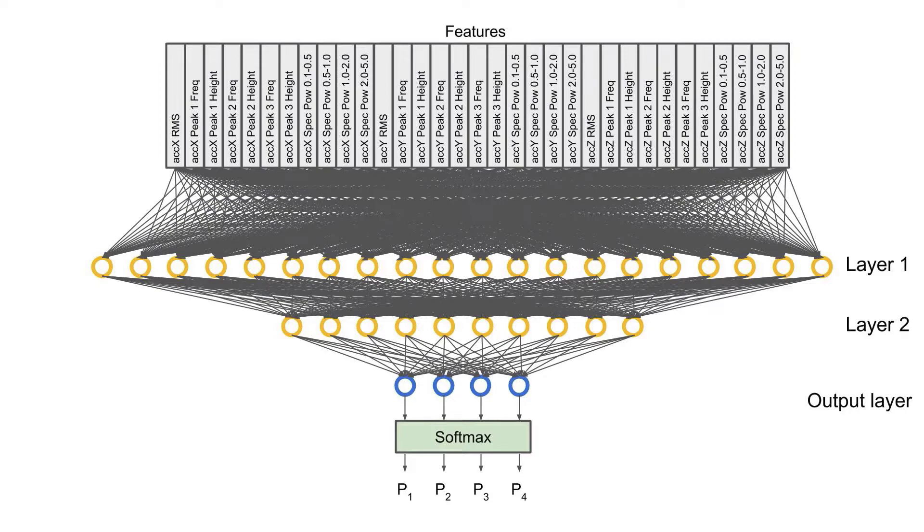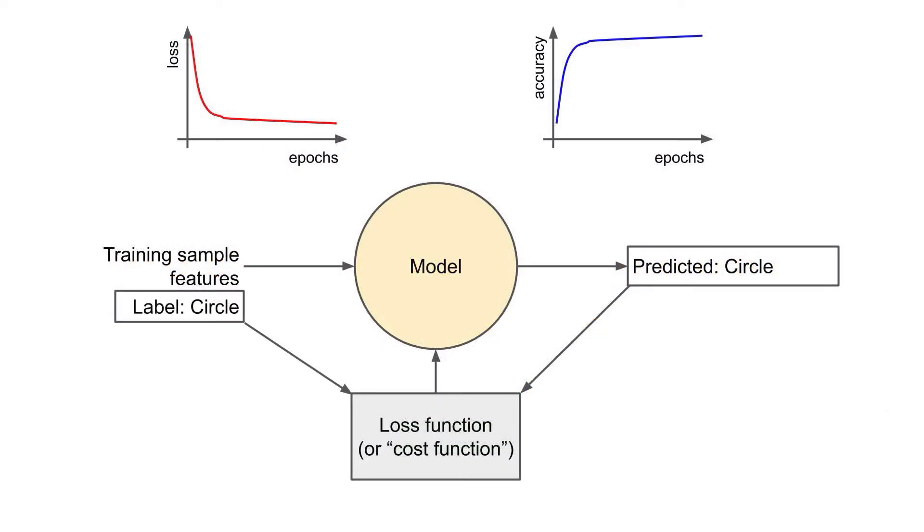We also broadly covered how model training works with back propagation. Training samples are sent to the model and the model makes a prediction. We use a loss or cost function to figure out how far off the model was from the true label, and that loss or cost value gets fed back into the model during back propagation. Over time, ideally the model's parameters will begin to pick up on trends in the data and make better predictions as training continues. We should expect to see the loss value decrease and the accuracy increase.